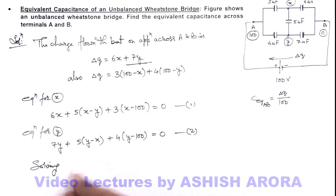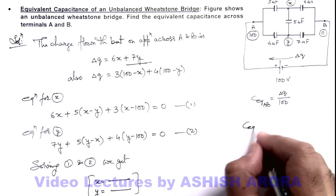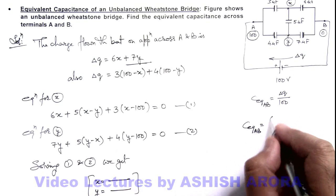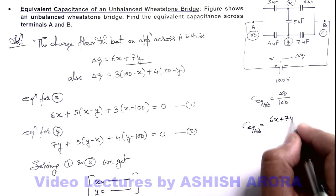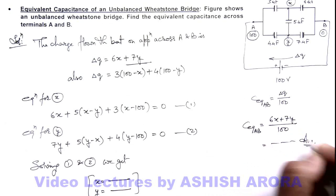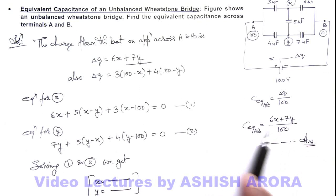I can simply write solving 1 and 2, we get the value of x as well as we get the value of y. If you get the value of x and y here, you can substitute it over here, you'll get the value of equivalent capacitance across AB, which is 6x plus 7y divided by hundred, and this will be the answer to this problem. I am not executing the mathematical exercise, I am leaving it for you as an assignment, so complete it and analyze it thoroughly.